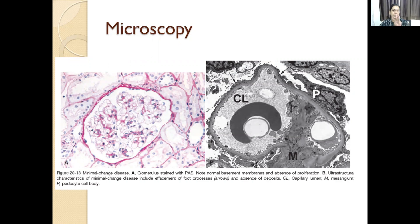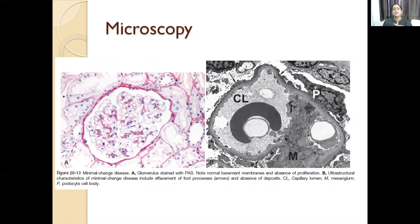In the microscopy, I will discuss under three headings: light microscopy, electron microscopy, and immunofluorescence. In light microscopy, we will not be able to see any change in the glomeruli at all. In electron microscopy, we will see effacement — that is fusion of these foot processes — which is the important characteristic finding. In addition, there is something called lipoid nephrosis related to the tubules in minimal change disease, wherein lipid secretions get accumulated, forming lipoid nephrosis.